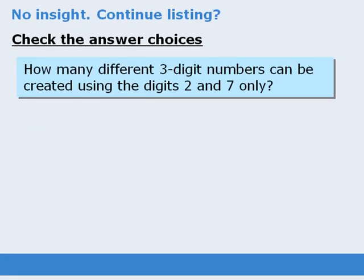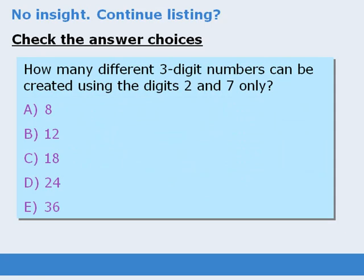If, for example, our answer choices to this question range from 8 to 36, then we know that we must list at most 36 possible outcomes, in which case it may be reasonable to continue listing.